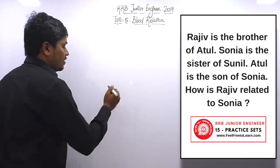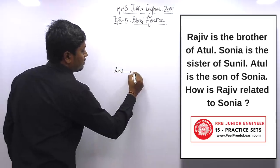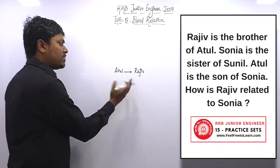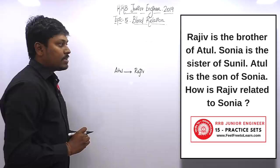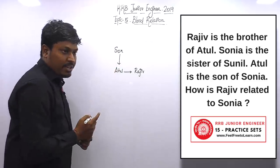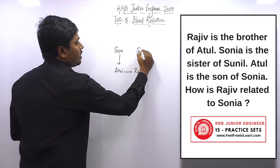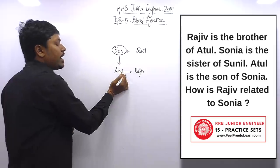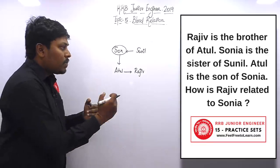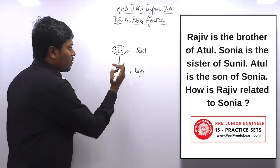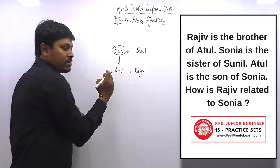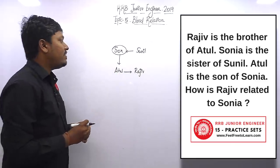Question number one: Rajiv is the brother of Atul, so Atul has a brother that is Rajiv. Sonia is the sister of Sonil. Atul is the son of Sonia, so Sonia's son is Atul. Since Sonia is Sonil's sister and Sonia's son is Atul, and Atul's brother is Rajiv, both Atul and Rajiv are sons of Sonia. The question is: how is Rajiv related to Sonia? The answer is son.